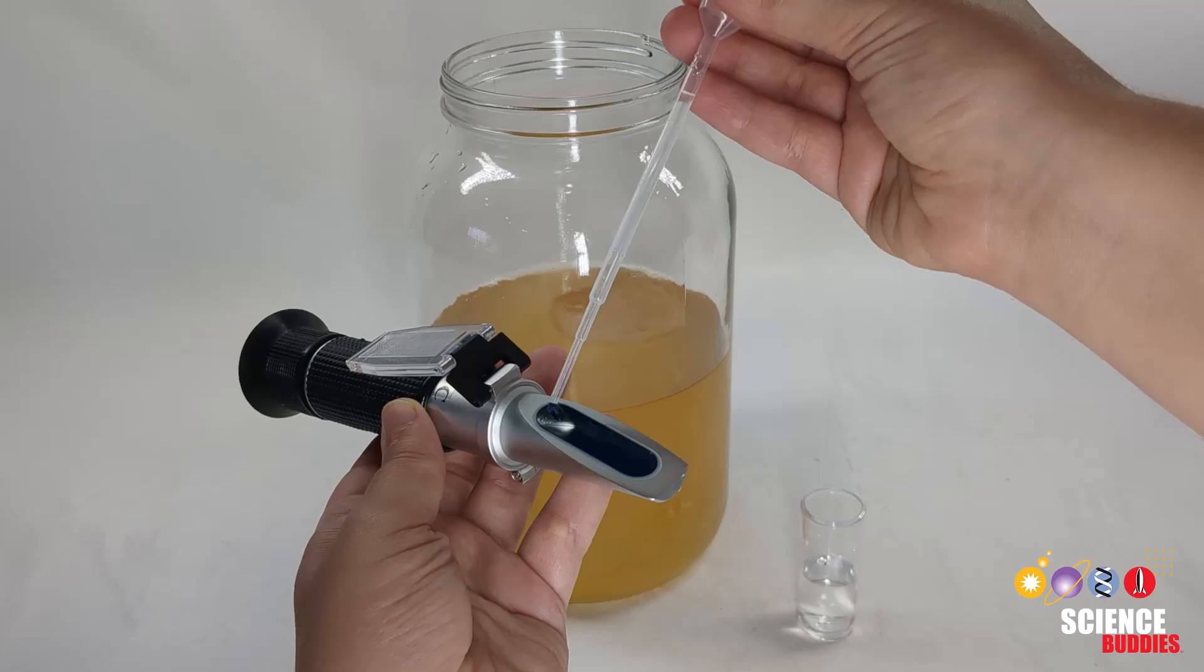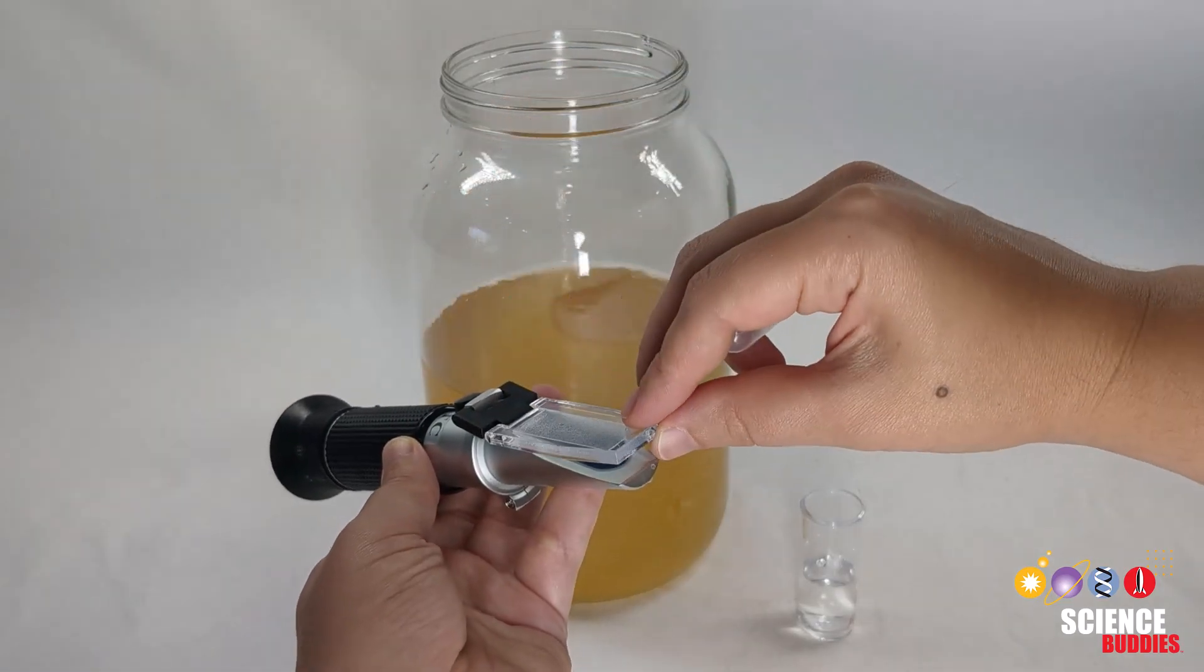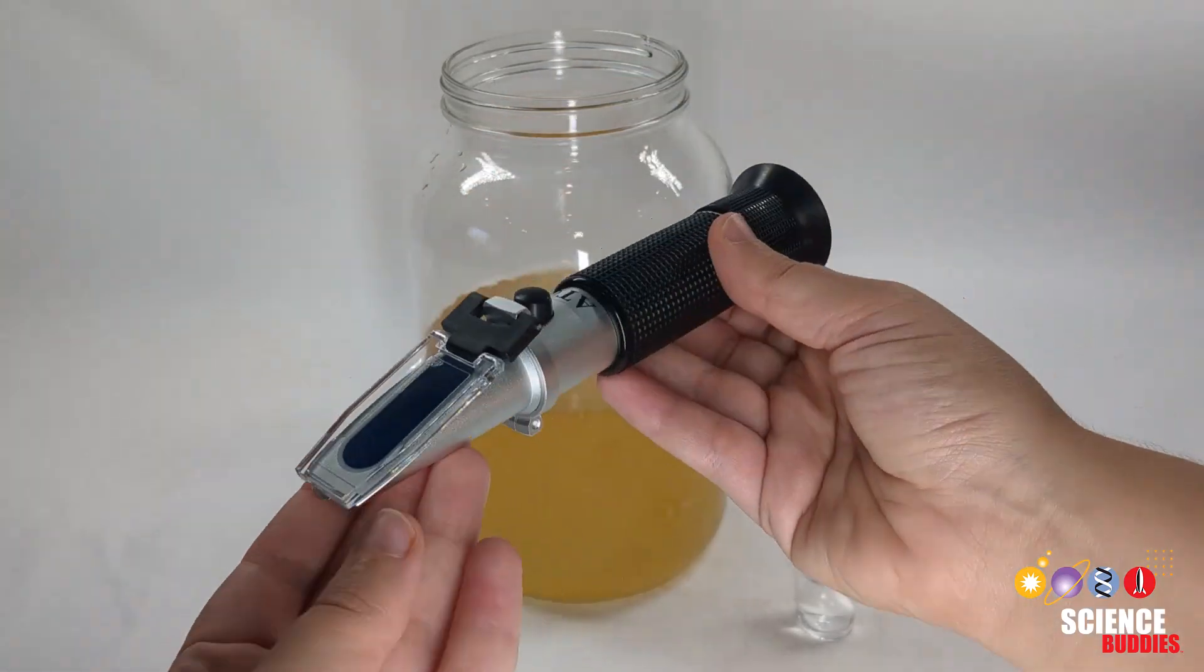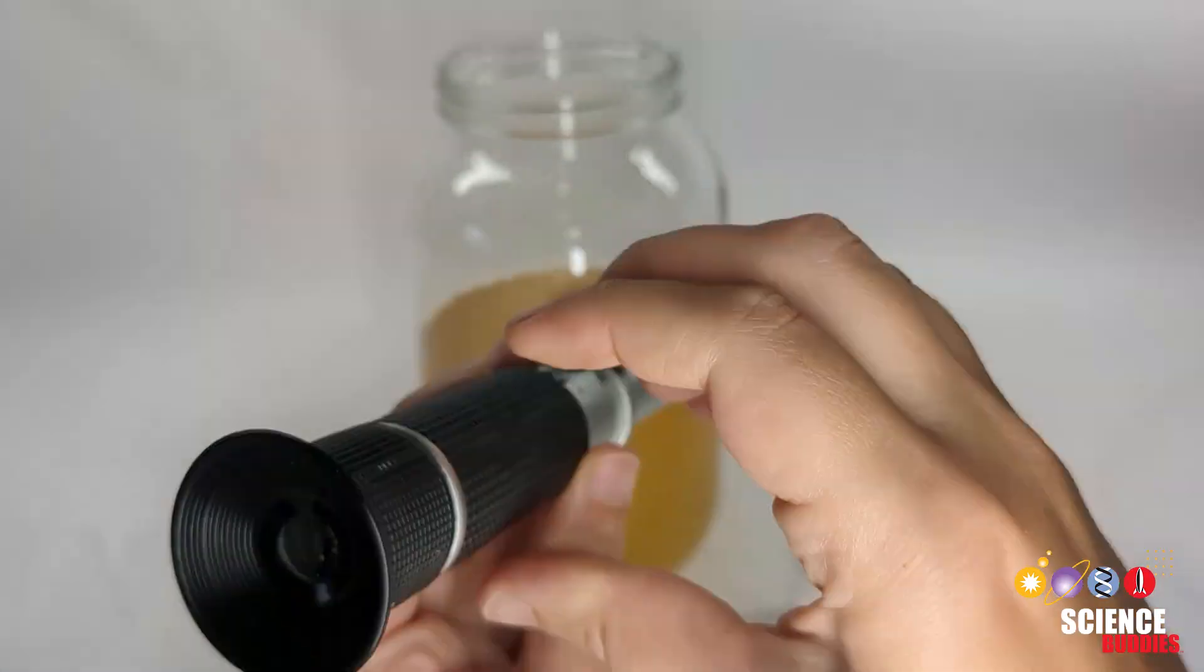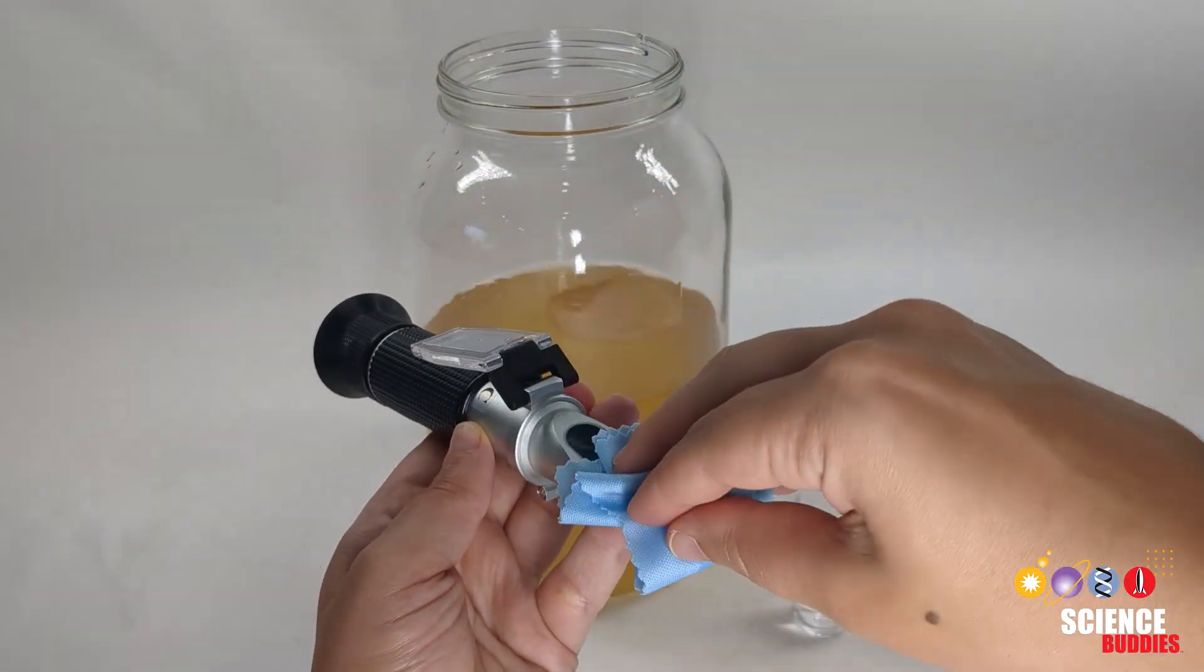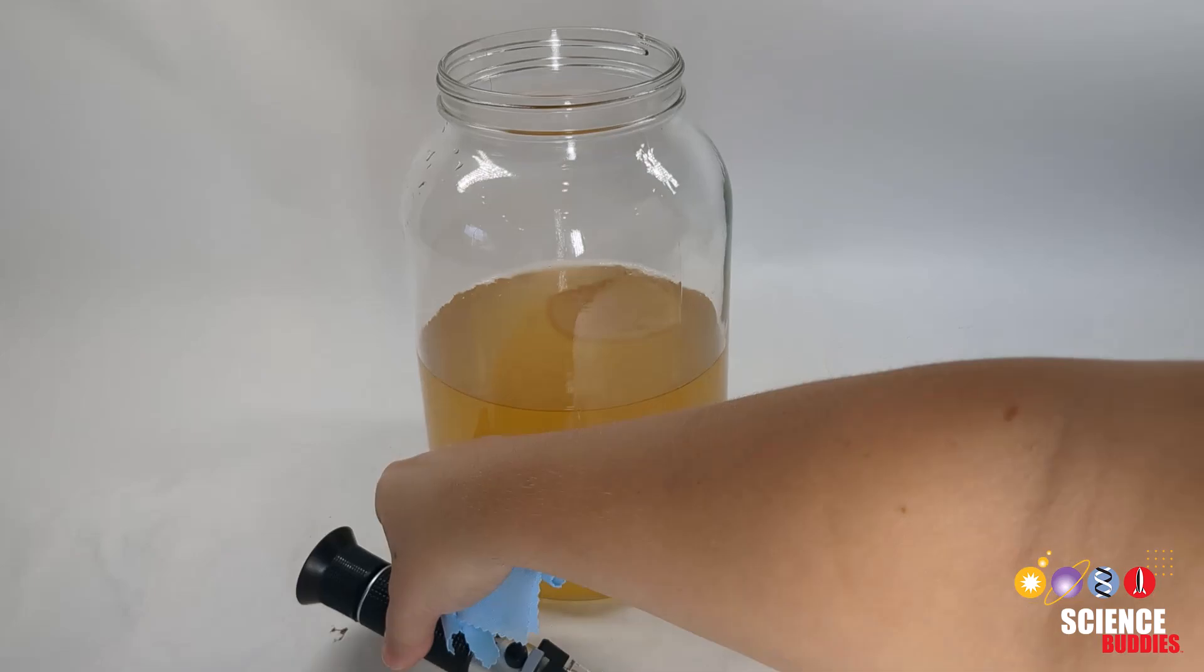Interestingly, you can measure the sugar content or density of the solution using a refractometer. To use the device, first check the calibration of the refractometer by adding filtered water to the prism assembly under the cover plate. The reading should be zero if the device is properly calibrated.